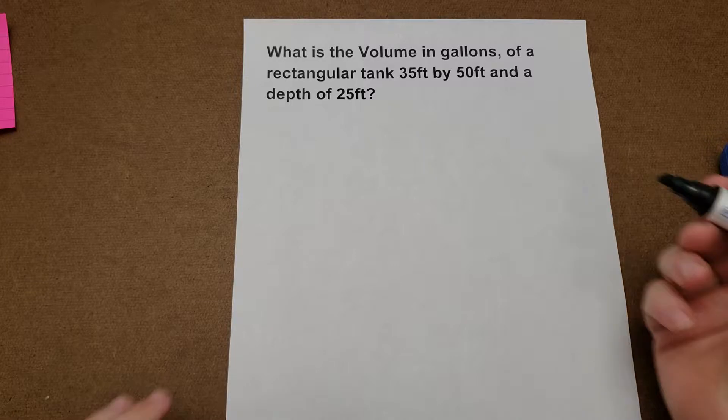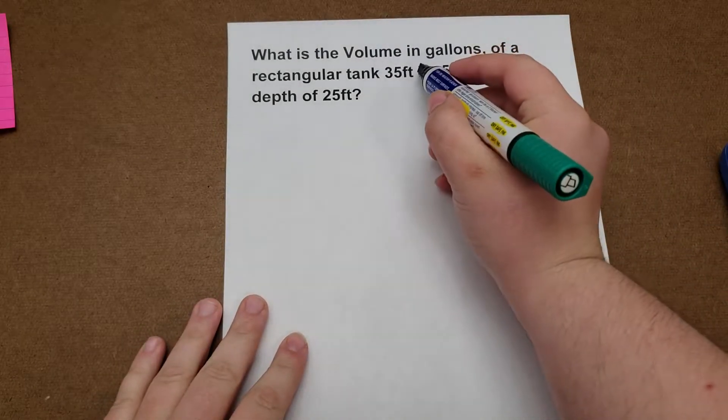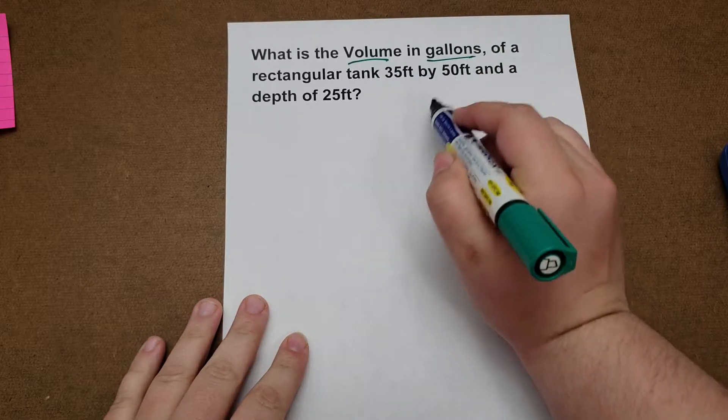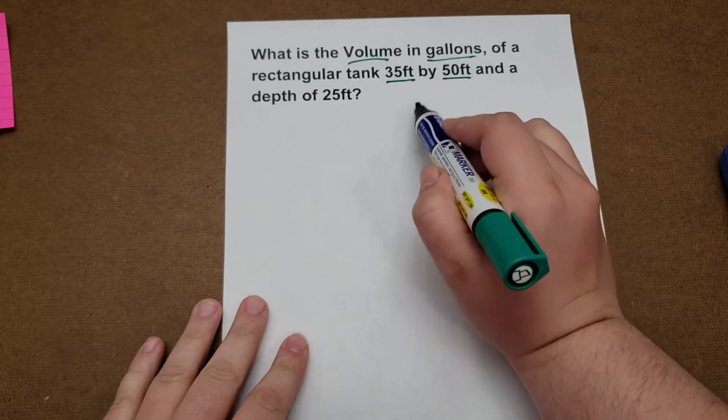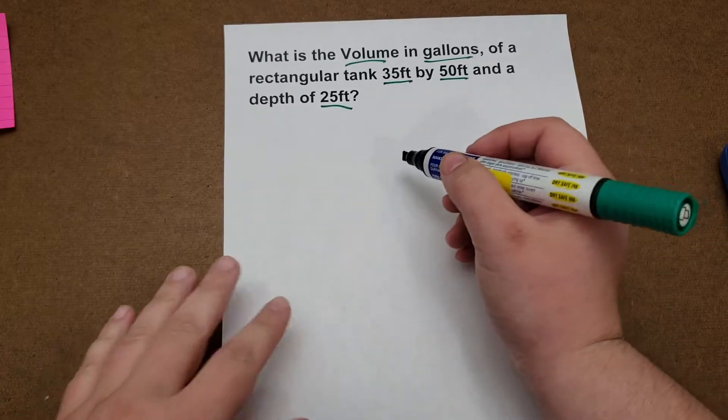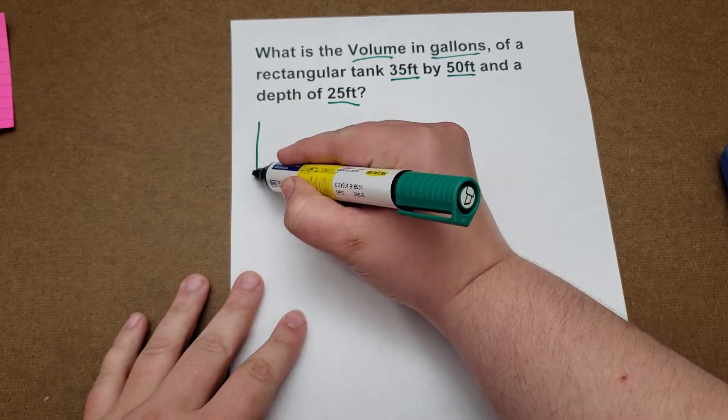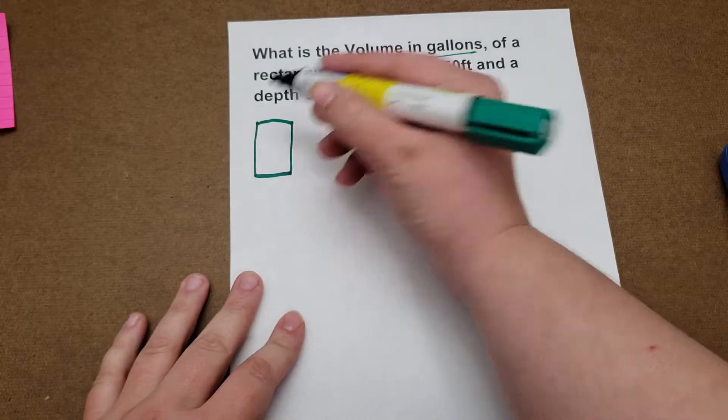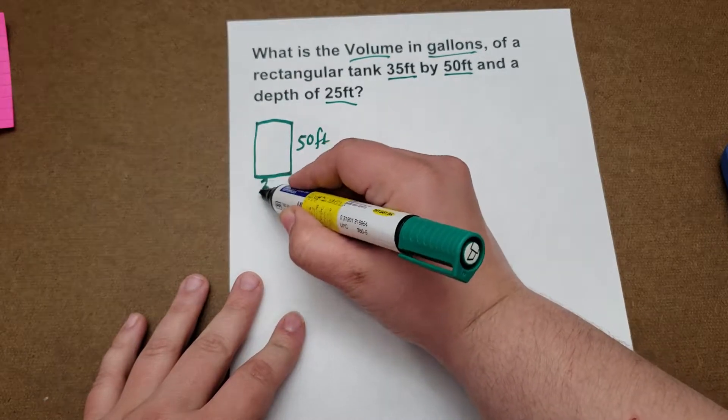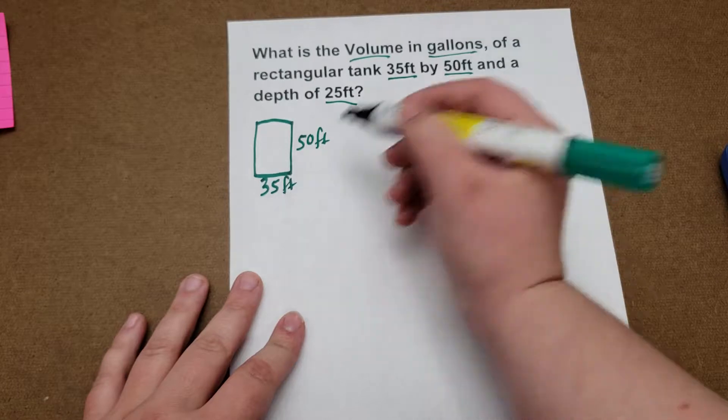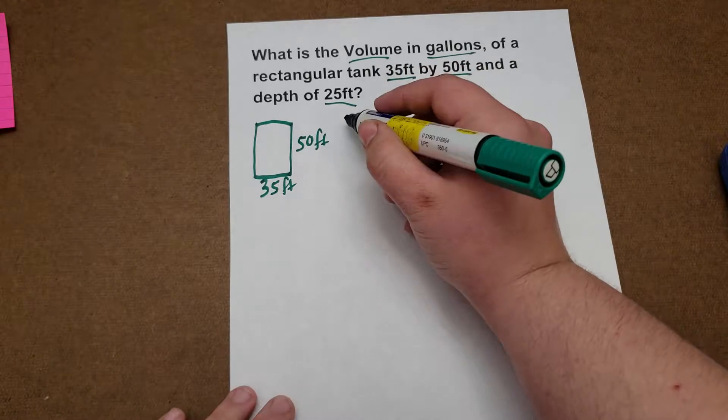As usual, the easiest thing to do is mark everything they give us. So first, they want the volume in gallons. They give us the top of the tank is 35 by 50, and then the depth is 25. So let's draw this out. It is 50 feet by 35 feet, and then the depth is obviously 25 feet.